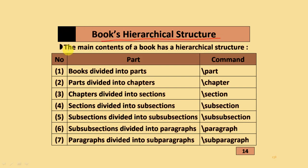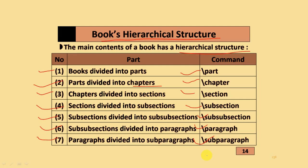The book hierarchical structure is as follows: books are divided into parts using \part; parts are divided into chapters using \chapter; chapters are divided into sections using \section; sections are divided into subsections using \subsection; subsections are divided into sub-subsections using \subsubsection; sub-subsections are divided into paragraphs using \paragraph; and paragraphs are divided into subparagraphs using \subparagraph.